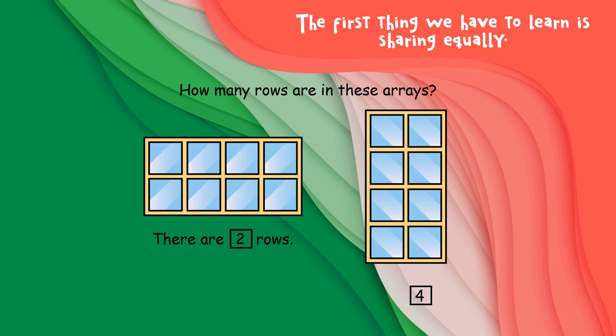The first thing we have to learn is to share equally, and we use lots of practical equipment in the pod to help us do this with smaller numbers, then we move on to much larger numbers.